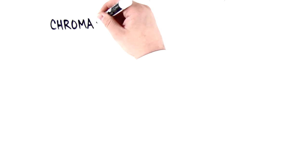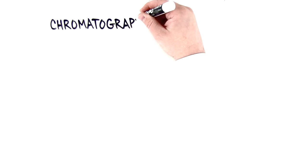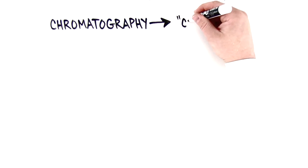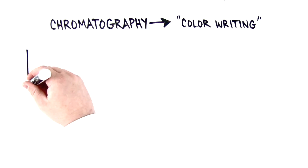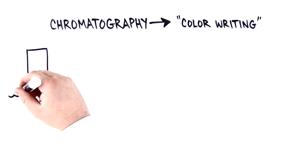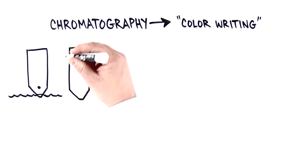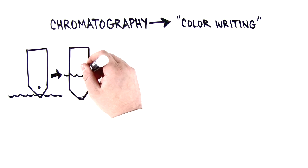Chromatography literally means color writing and is a method long used for separating mixtures into their component items. You are probably familiar with paper chromatography, placing a spot of black ink on some paper, dipping it in water and seeing the colors separate out.